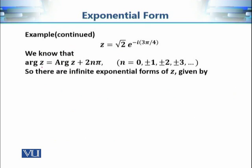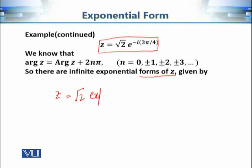We also know that the argument of z has infinitely many possible values, so we can also say that this exponential form has infinitely many values. A given complex number has infinitely many exponential forms. We can write it as r times e raised to power iota times (minus 3 pi by 4 plus 2n pi), where n is any integer. These represent all the infinitely many possibilities of the exponential form.